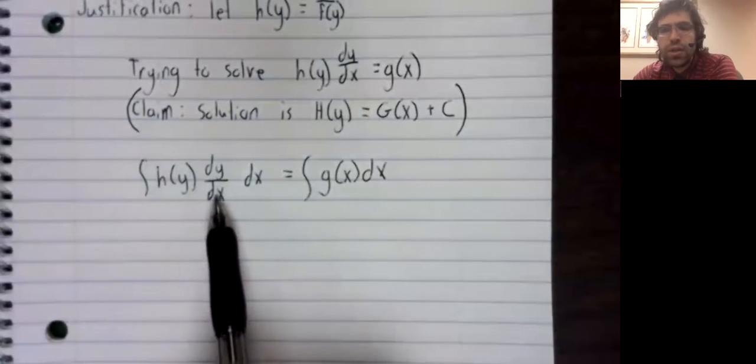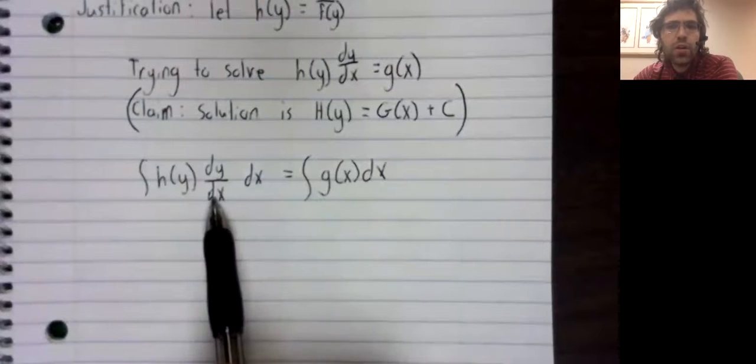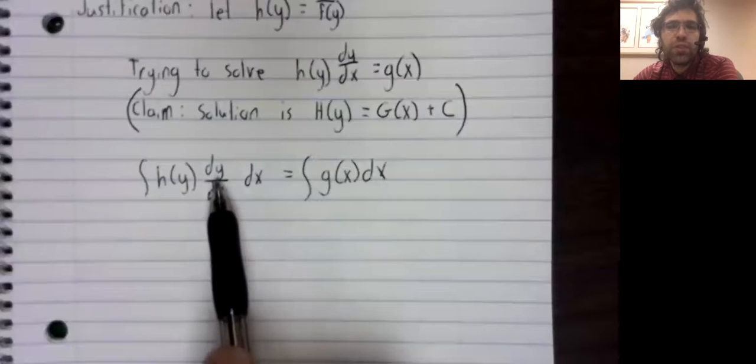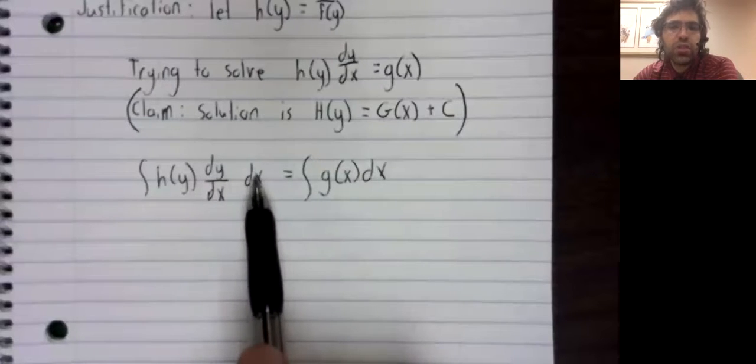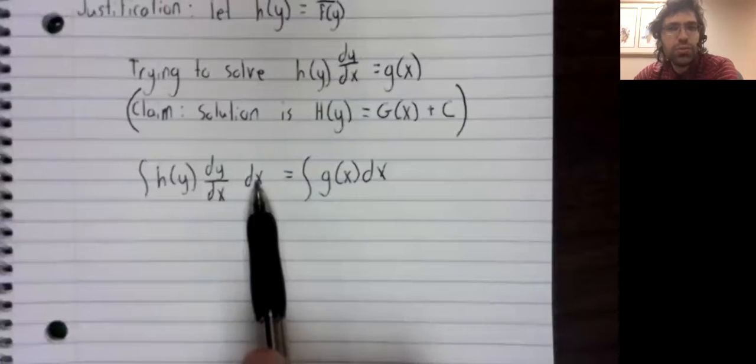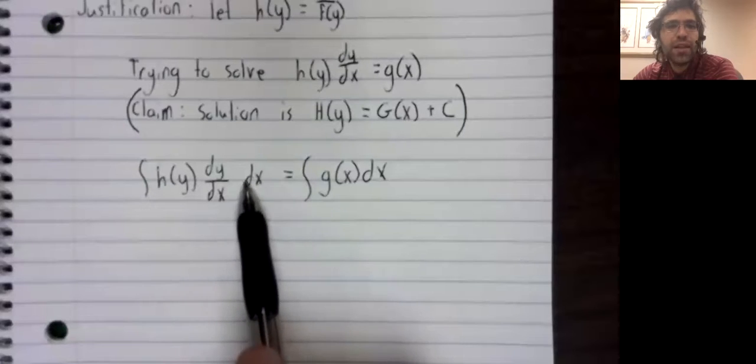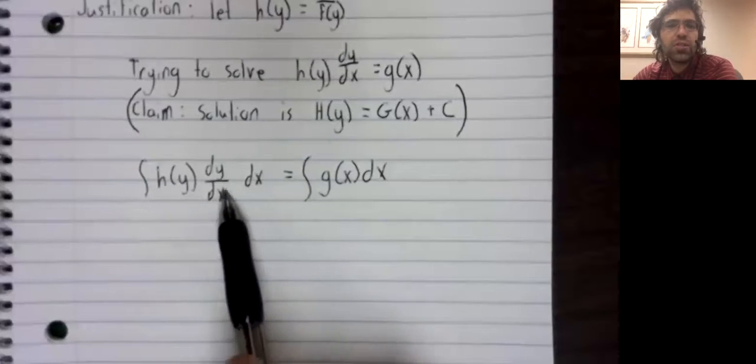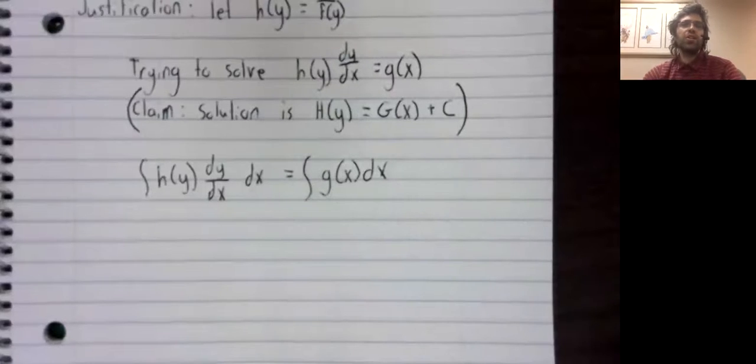Now be careful here. This dx does not exist as its own thing. It is part of a piece of notation that indicates differentiation. And this dx is just a piece of notation telling you that you are integrating with respect to x. So what you cannot do, as much as you might like it, is cross these dx's out. We need another way of approaching this.